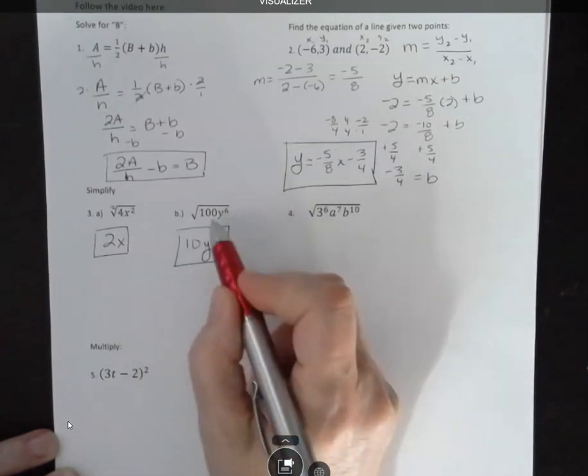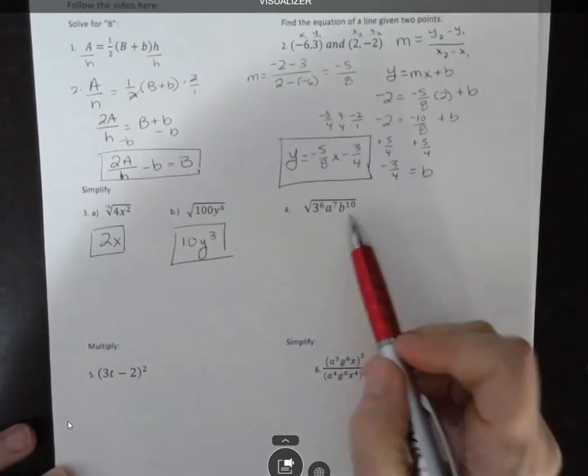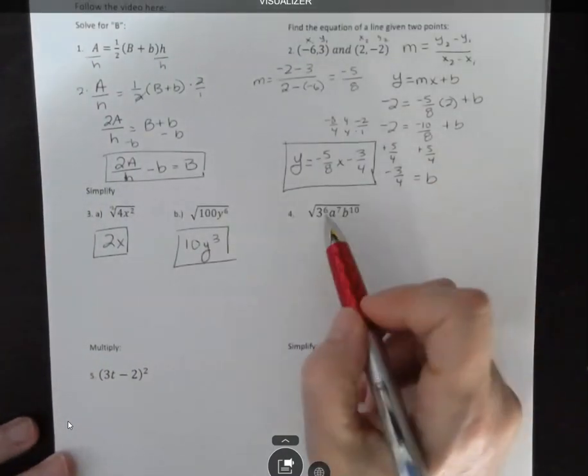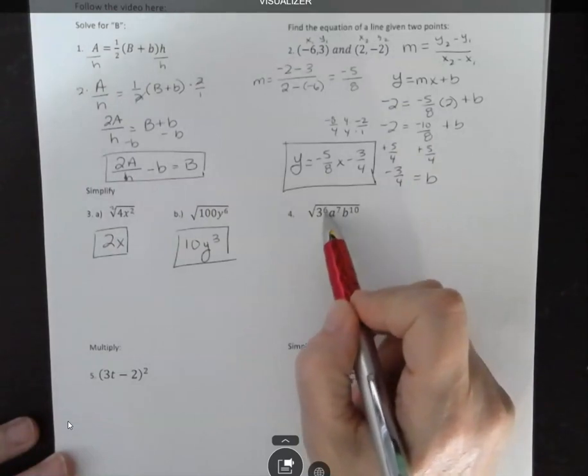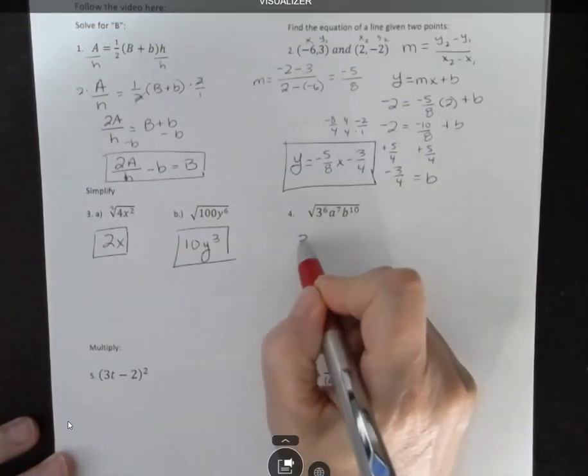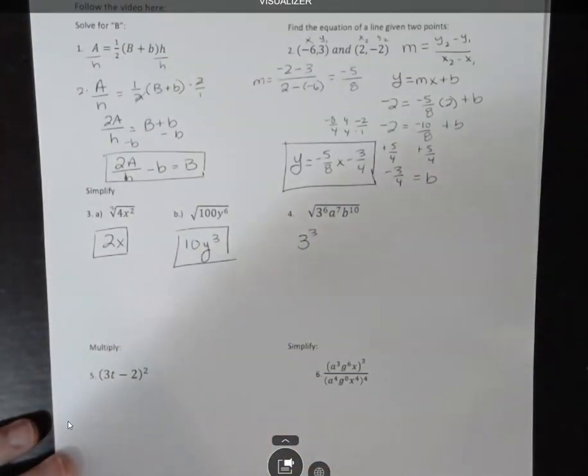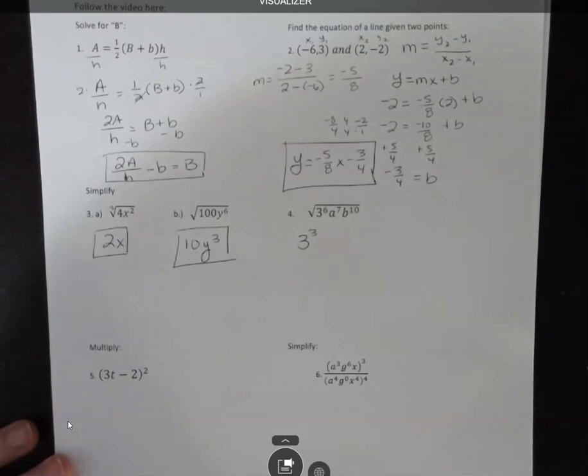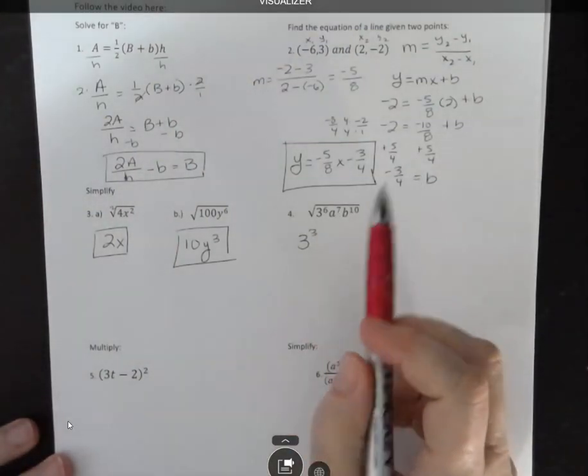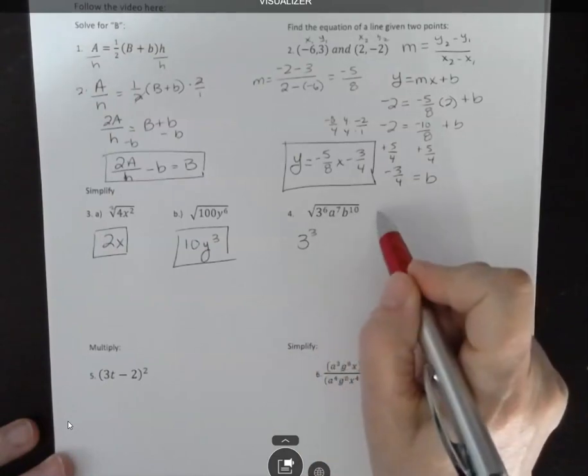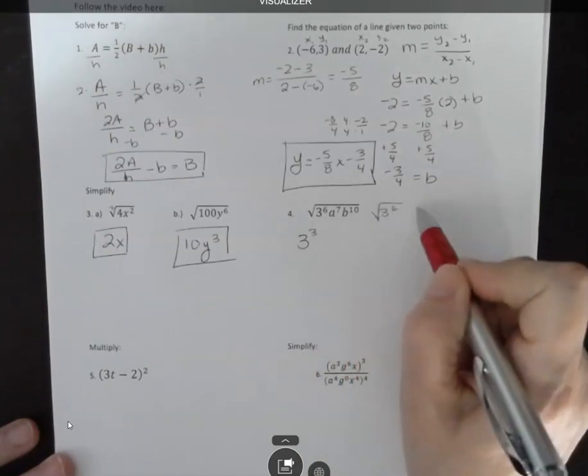Those came out nice because 2 goes into 6 and 2 evenly. Sometimes we can have something where it doesn't go evenly. First of all, I can say how many times does 2 go into 6? Three times. So I'm going to bring out 3 to the third power. I think the computer, when you put that in, if it's on the online, will take it as 3 to the third. You could also put 27; it would probably accept that also. Here's how I would think about it. I did the 3 to the 6 power already. I simplified that.